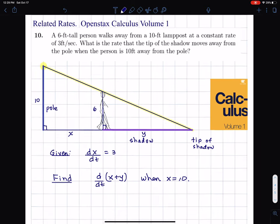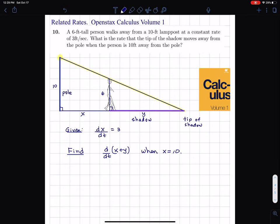And I'm going to try to find that when, that rate of change, when x is equal to 10. So when the person is 10 feet away from the pole. All right. Now, the harder part maybe is using formulas.